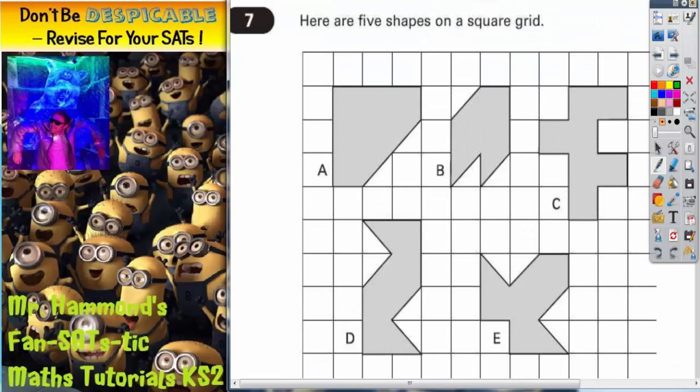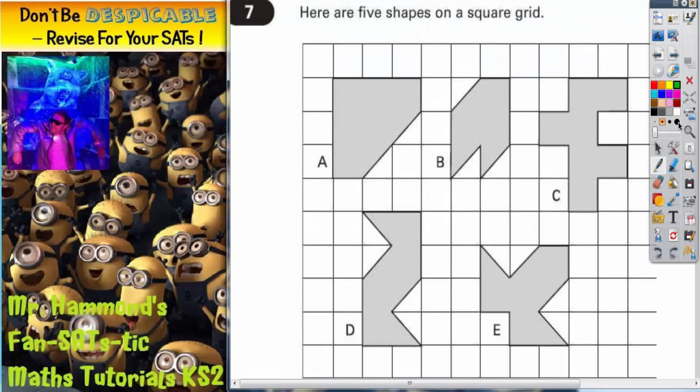Now the important thing to remember here is that any time you have to check for lines of symmetry, you should really be asking for a mirror to double check. Now lines of symmetry can either be horizontal, vertical, or slanted. Although it's easy to spot horizontal and vertical lines of symmetry, they will put questions that involve slanted lines of symmetry on your exam paper. And we have one such example here.